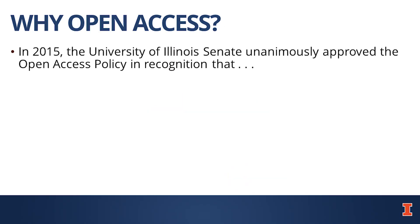Why did the Academic Senate of the University of Illinois at Urbana-Champaign unanimously pass the Open Access Policy in 2015? Because we are a land-grant institution, and the mission of our institution is to pioneer innovative research tackling global problems and expanding the human experience. This research, though, is not helpful to the public if it is buried behind paywalls and expensive journal subscription fees. Most of the research conducted at the university is publicly funded, either by federal or state grants, and it's meant to help the general public.